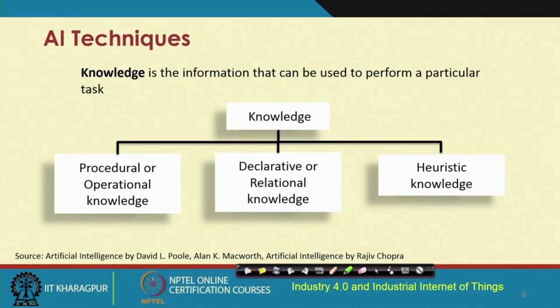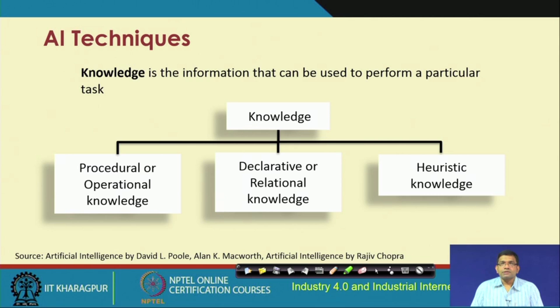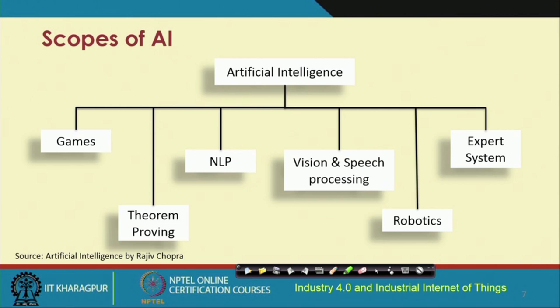Storing such kinds of knowledge — whether procedural, declarative, or heuristic — is important and will be used to make the next move or to improve industrial processes. Based on existing knowledge, you can try to improve processes in the future. Heuristic knowledge consists of rules of thumb that are used to address certain problems and challenges at different points in time.